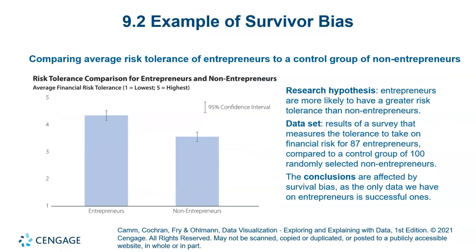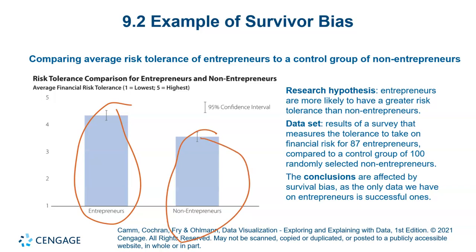Another example of survivor bias: if we focus only on entrepreneurs and not non-entrepreneurs, and we have 100 cases in a control environment, we should also look at failure cases. A survey measuring tolerance for financial risk showed 87% of entrepreneurs, which is not realistic compared to a control group of 100 randomly selected non-entrepreneurs. This mistake is called a statistical fallacy.